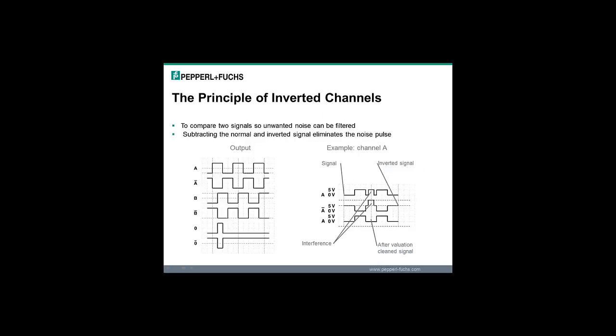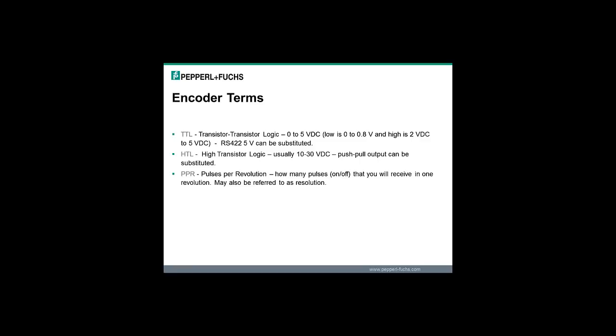The encoder with inverted channels of A, B, and zero are used so unwanted noise can be filtered. A device such as a controller or PLC will subtract the normal and inverted signal to eliminate the noise pulse. A few common encoder terms are TTL, HTL, and PPR. TTL is an acronym for transistor-transistor logic. This is for a 0-5 volt DC range where 0-0.8 volts is a low and 2-5 volts DC is a high. The RS422 output can be used if a TTL output is requested. The HTL is an acronym for high transistor logic. This is usually 10 to 30 volts DC and push-pull output can be substituted.